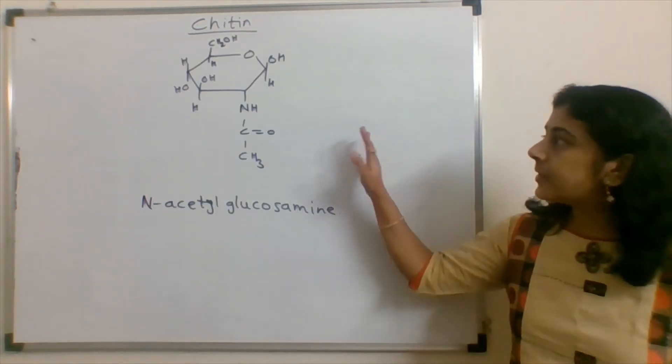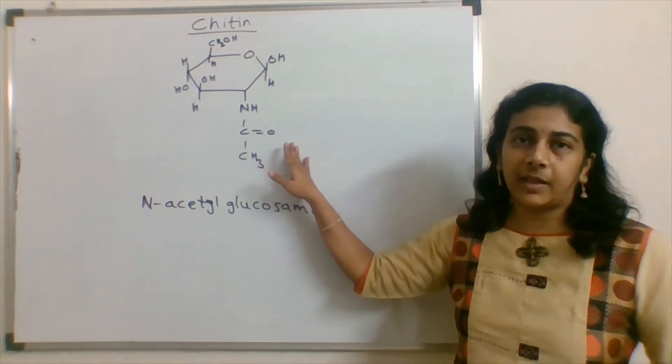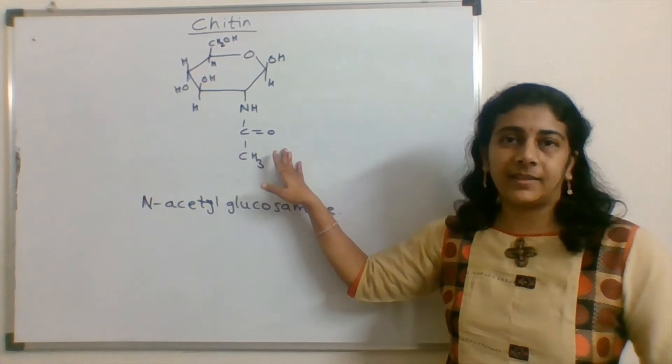So this is the structure of N-acetylglucosamine. Here, in the second carbon position, amino group is there, which is acetylated.